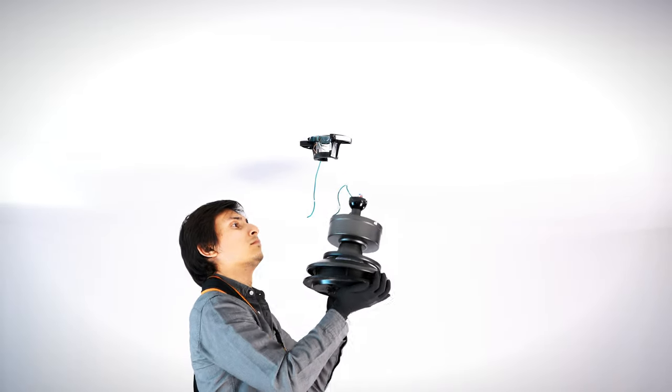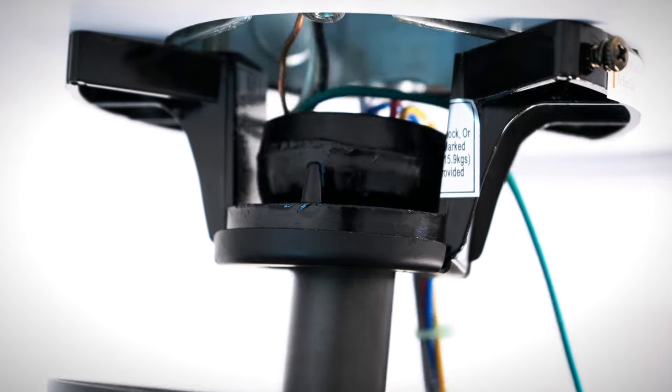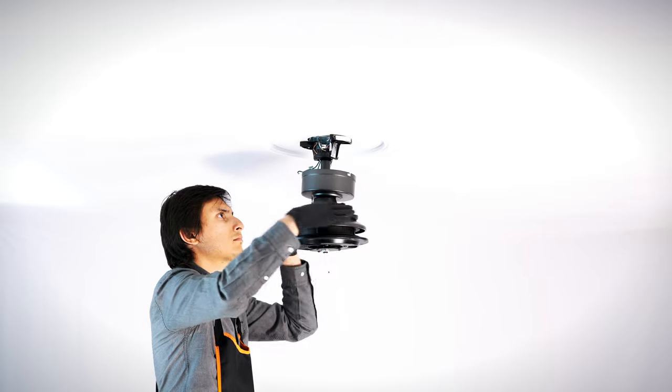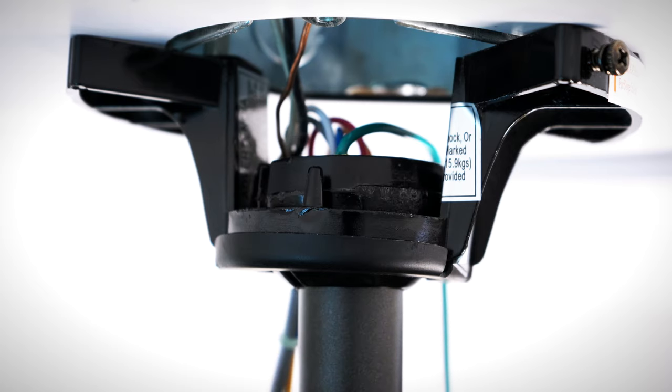Carefully bring the fan motor up to the ceiling and slide the hanger ball into the hanger bracket. Turn the motor until the groove in the ball aligns with the tab in the hanger bracket.